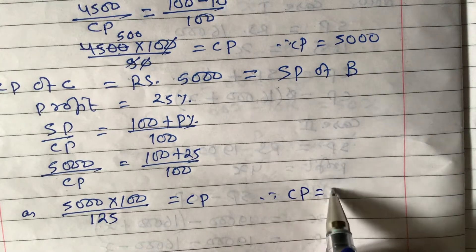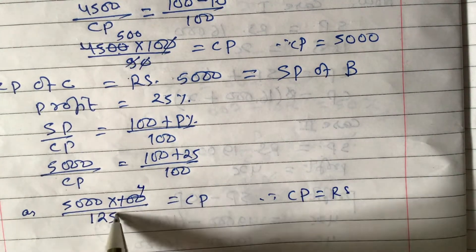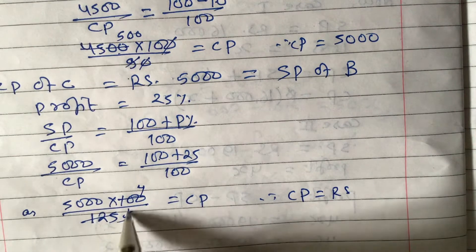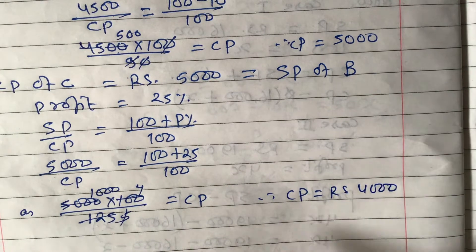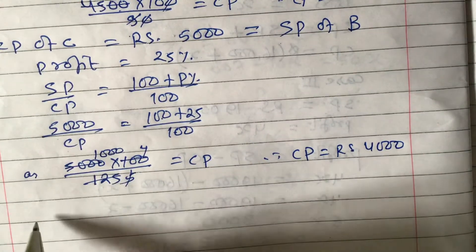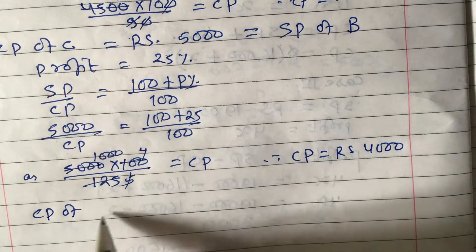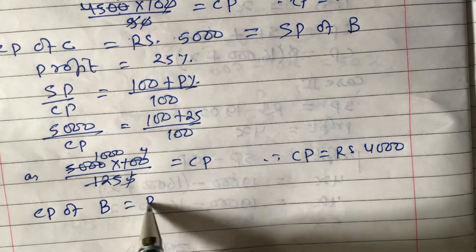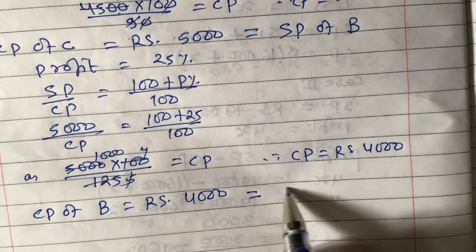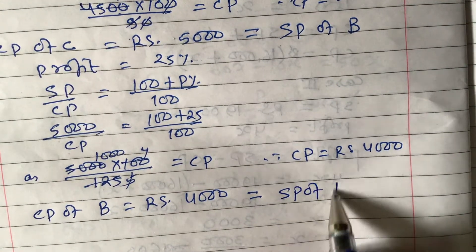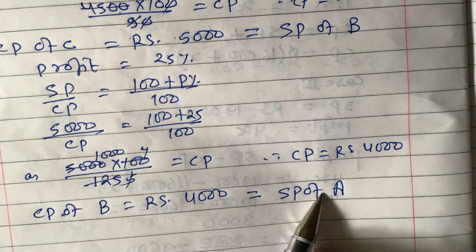Solving: 5000 × 100 / 125 — simplifying, 125 fives are 25 and 5 cancel, giving ₹4,000. So CP of B = ₹4,000, which also equals SP of A.